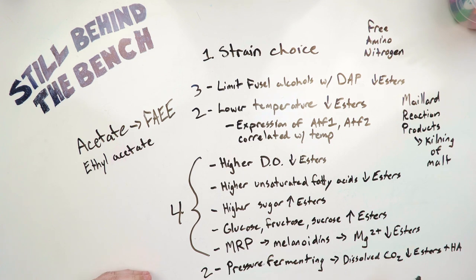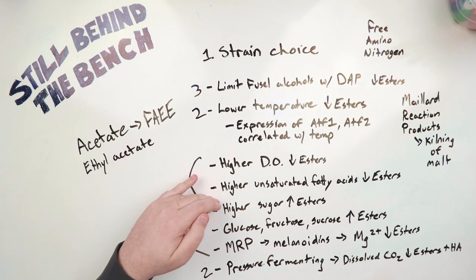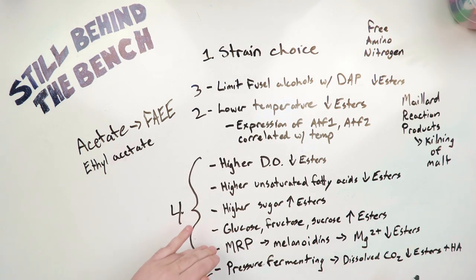But if you want more esters, obviously you start to do the opposite of this. Choose a high ester strain. Raise the temperature. Don't ferment under pressure. Lower the amount of initial oxygen. Not too low, but lower. Don't add any unsaturated fatty acids. Makes me wonder if you can buy saturated fatty acids and add that. Use more sugar. Specifically add in glucose, fructose, or sucrose. Use lighter grain products. Non-dark malts. You'll be able to increase your ester production.